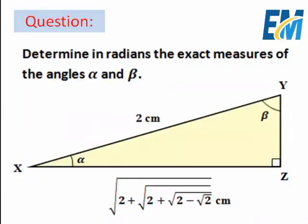Today we will solve the following trigonometric problem. We have a right angle triangle at Z, with vertices X, Y, Z. The angle YXZ is denoted by alpha, the angle XYZ is denoted by beta, and the angle at Z is a right angle. The length of side XY is 2 cm, and the length of side XZ is √(2 + √(2 + √(2 − √2))) cm. We have to find the measures of angles alpha and beta in radians.